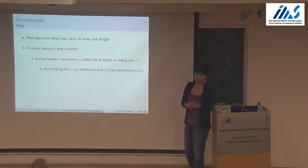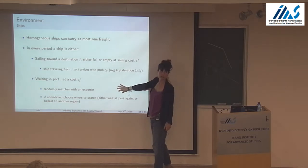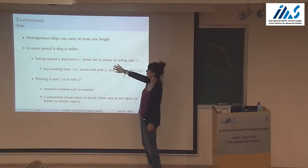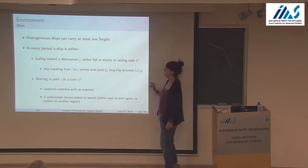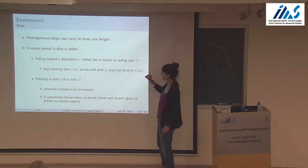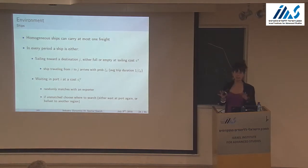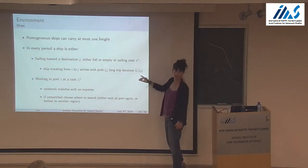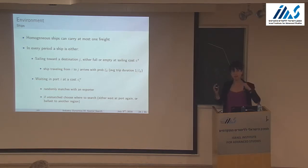Ships are homogeneous and can carry at most one freight. In every period, a ship is either sailing or waiting in a port. If sailing toward some destination, it pays sailing cost C — primarily fuel. The ship traveling from I to J arrives probabilistically with probability xi_{IJ}, a tractability trick where the average trip duration is one over xi. This avoids tracking how many ships are one, two, three, four periods from arrival.